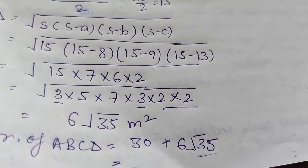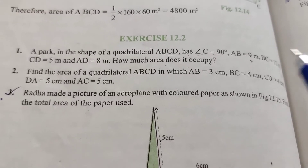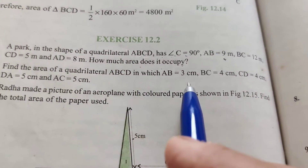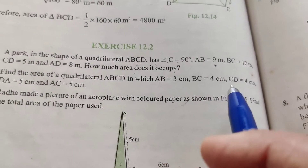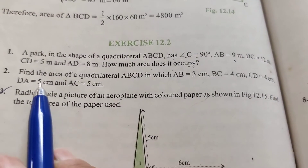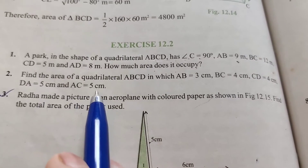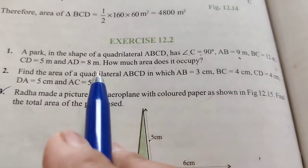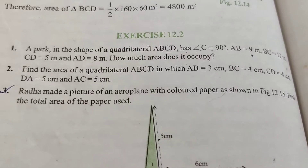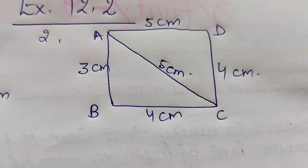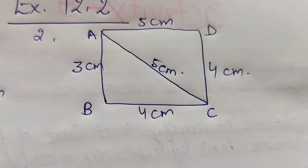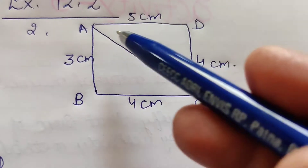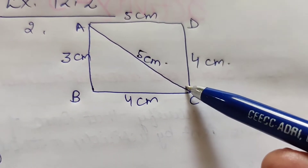Question number 2: Find the area of quadrilateral ABCD in which AB equals 3 centimeter, BC equals 4 cm, CD equals 4 cm, DA equals 5 centimeter, and AC equals 5 centimeter. This is the same type of question as question number 1. ABCD is a quadrilateral with AB=3, BC=4, CD=4, AD=5, AC=5 centimeter.